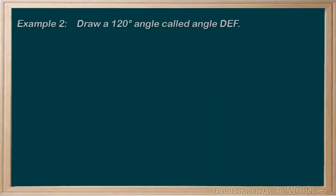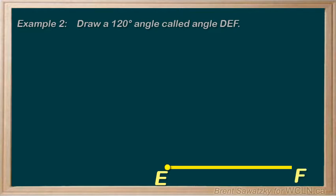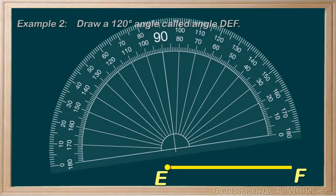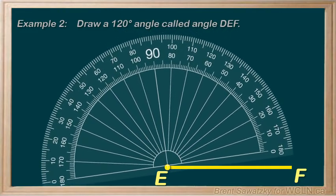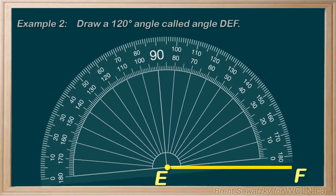Example 2: Draw a 120 degree angle called angle DEF. We'll do it in steps this time. Step 1: We need a reference side, so we use the bottom of our protractor as a straight edge and make a line. Step 2: Labeling our line — mark the vertex E with a clear dot here, and at some other point we mark F. Step 3: We line up our protractor the same way as when measuring — the midpoint on the vertex and the zero on our line EF.